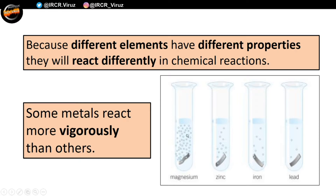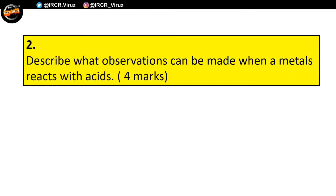We have loads of bubbles coming out, and in those bubbles you have hydrogen gas. Another thing you may notice is that if you touch the test tube, you will feel the temperature rising — it starts to get hot. And last but not least, we have lead. Lead has very low reactivity, so you can see the least amount of bubbles, meaning the reaction is still taking place but it's happening a lot slower. Task number two: describe what observations can be made when metals react with acids.